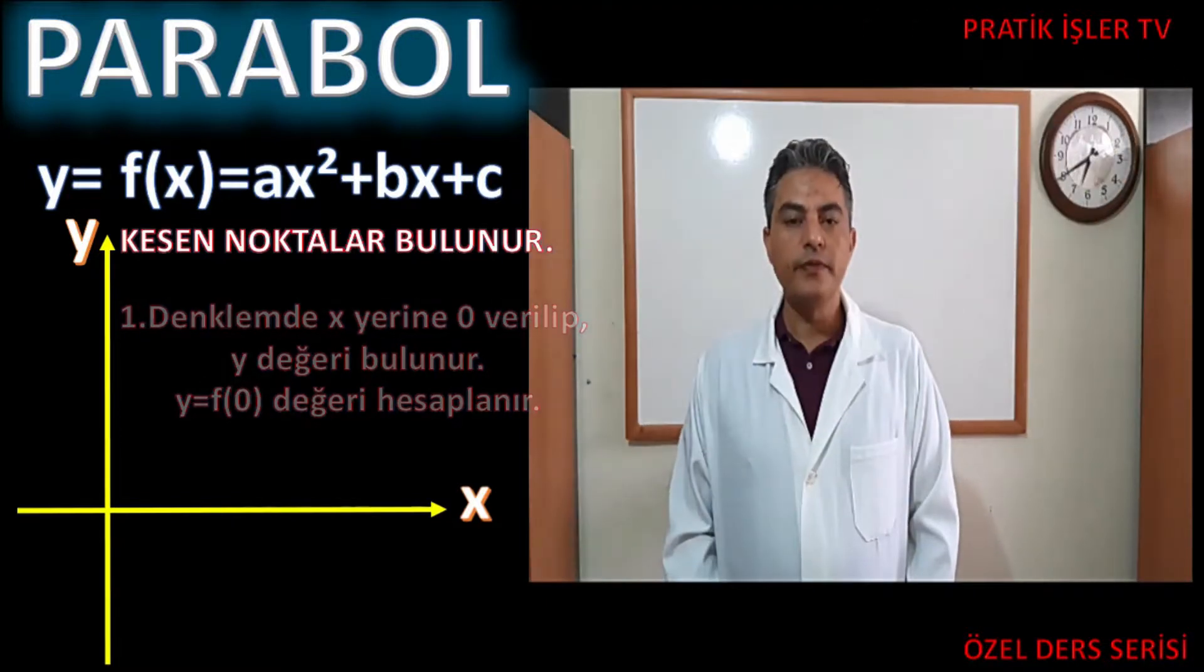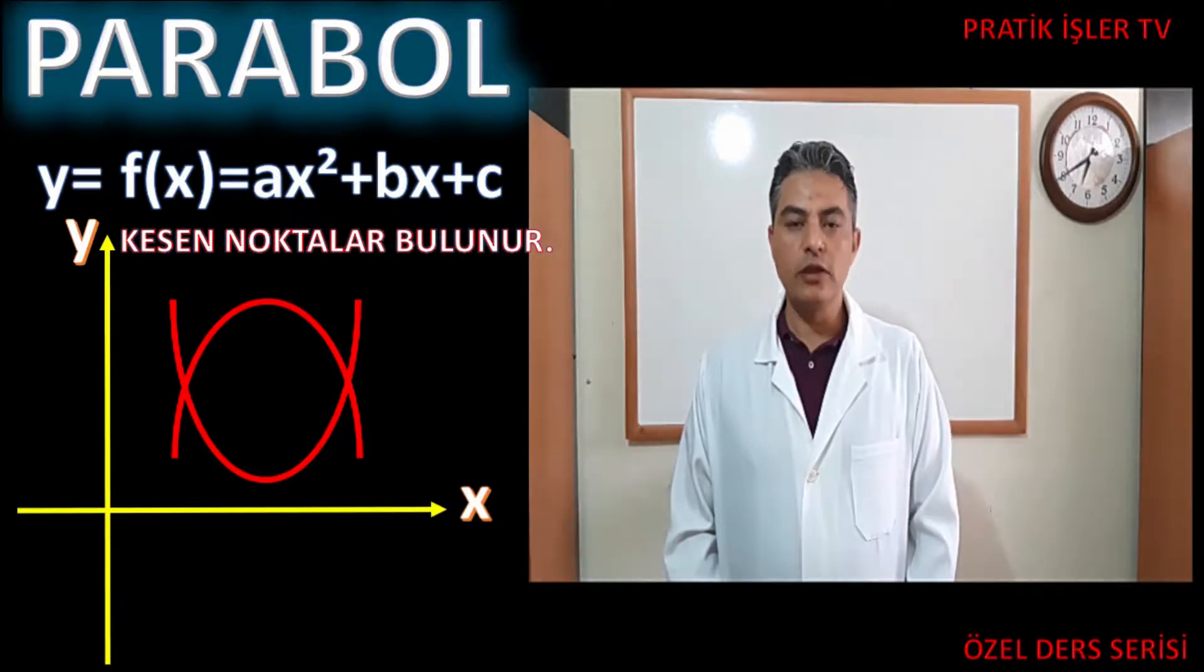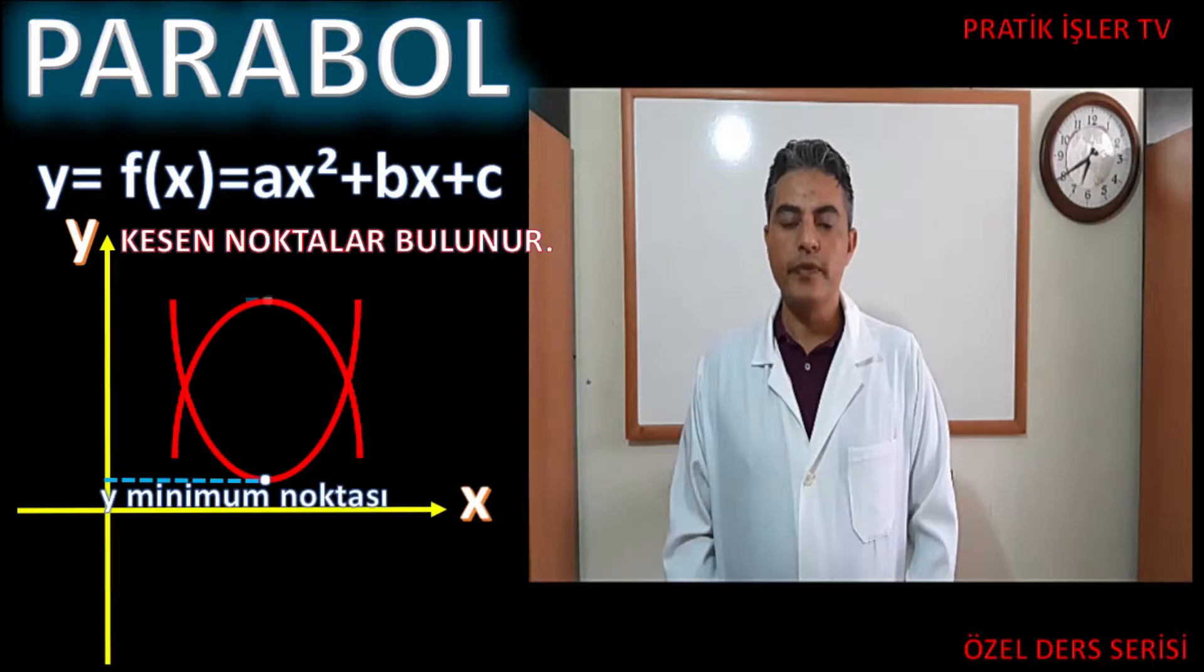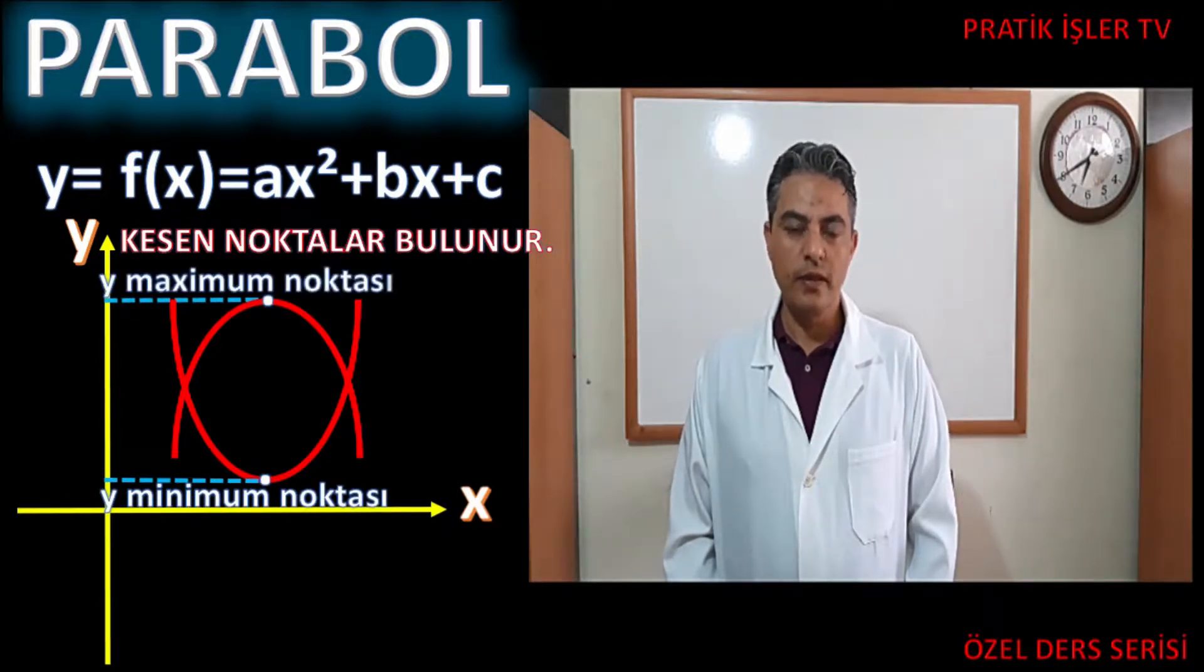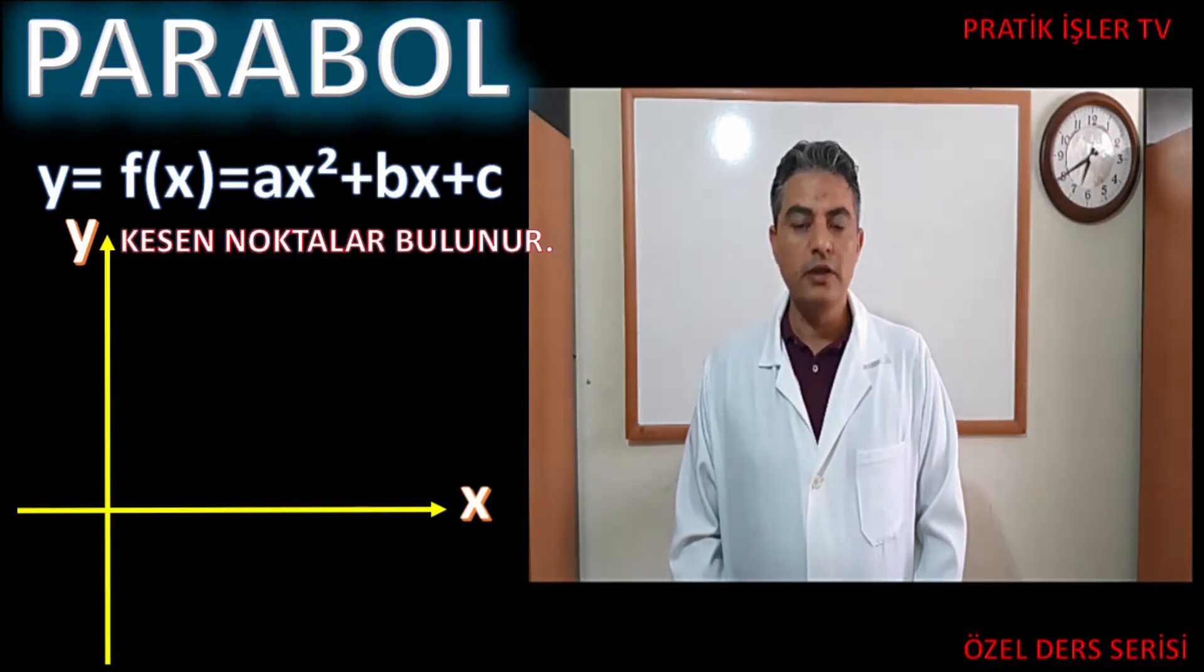Paraboller ya çukur şeklindedir ya da bir tümseğe benzerler. So, this parabola is Cartesian coordinate system with minimum y value or maximum y value. This is the parabola's tepe point. The second thing is the parabola's tepe point.